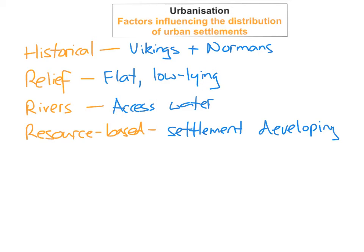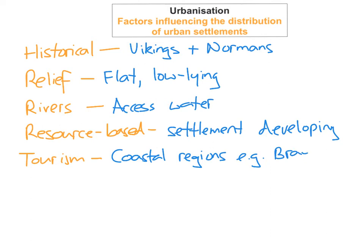Another factor is tourism. Tourists are attracted to coastal regions, which is another reason why urban areas develop along coasts. An example could be Bray or Wexford. Fishing is another factor — settlements in the past would have relied heavily on the fishing industry, and therefore urban areas would have developed along the coasts because they're close to a port or a fishing port.